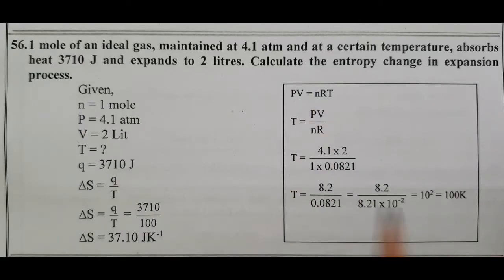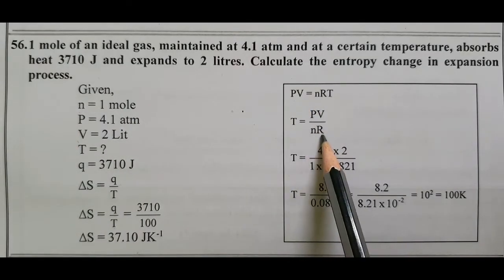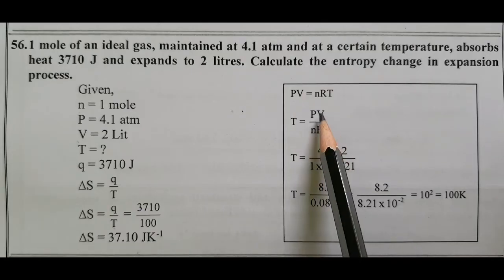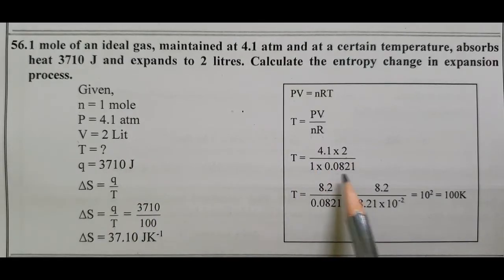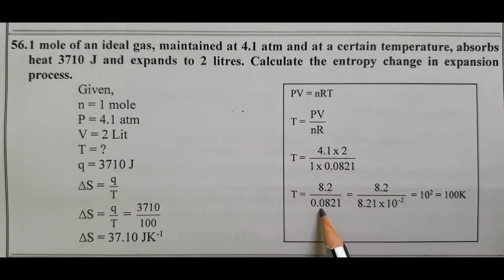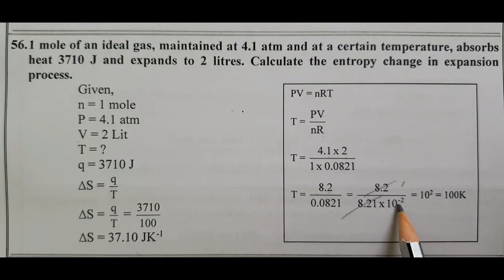Using the ideal gas equation PV equals nRT, we calculate temperature T. Substituting pressure 4.1 atm and volume 2 liters divided by number of moles 1 and R value 0.0821 gives 4.1 multiplied by 2 divided by 0.0821. The R value is 8.21 into 10 power minus 2, so 10 power minus 2 becomes 10 power plus 2, giving temperature T equals 100 Kelvin.